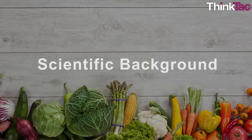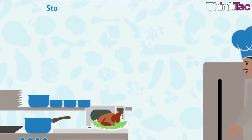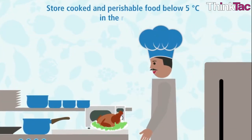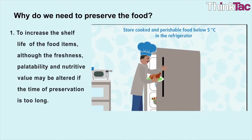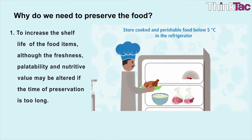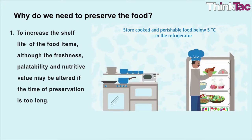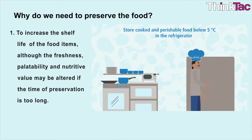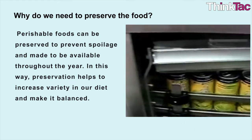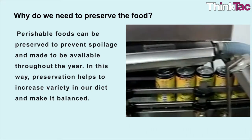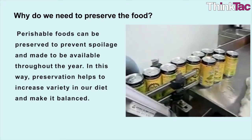Here is some scientific background. Food is a perishable commodity, so it needs to be stored properly to avoid contamination. Why do we need to preserve food? First, to increase the shelf life of food items, although the freshness, palatability and nutritive value may be altered if the time of preservation is too long. Perishable foods can be preserved to prevent spoilage and made to be available throughout the year. In this way, preservation helps to increase variety in our diet and make it balanced.